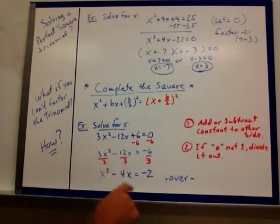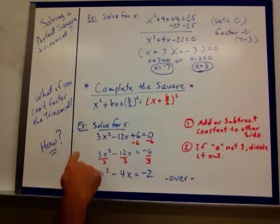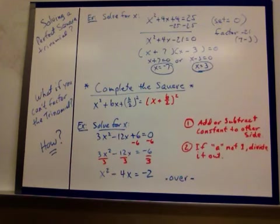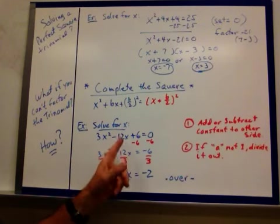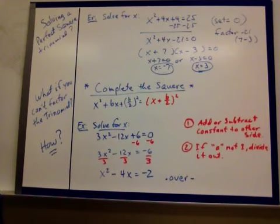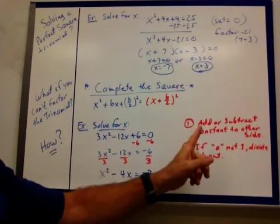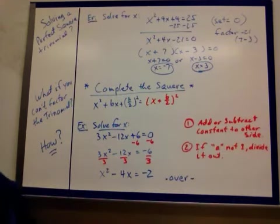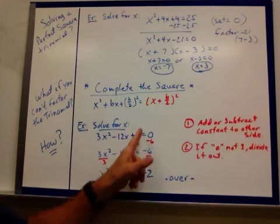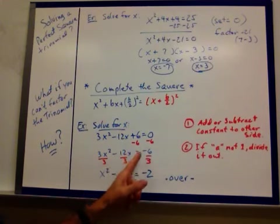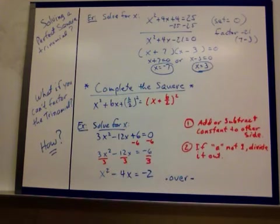So you get something like 3x squared minus 12x plus 6 equals 0. You can think about playing around with this thing to get it to work, but there's nothing that you're going to be able to just easily factor it into. So what do you do? Well, the first thing we want to do when we're completing the square is add or subtract a constant to the other side. If you've got a constant term on this left-hand side, add or subtract it over to the other side. So in our case, we're going to subtract the 6.